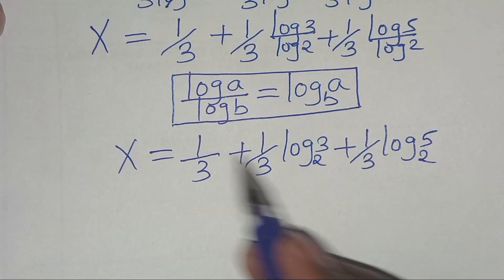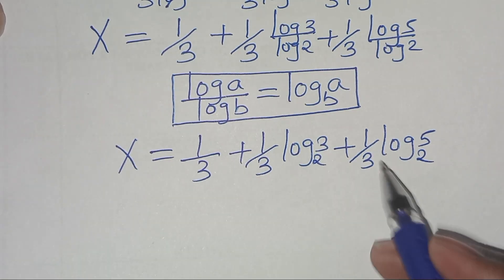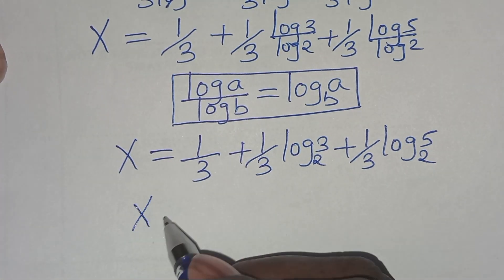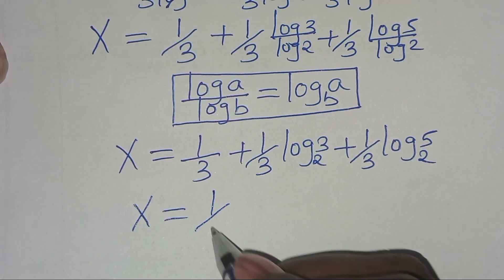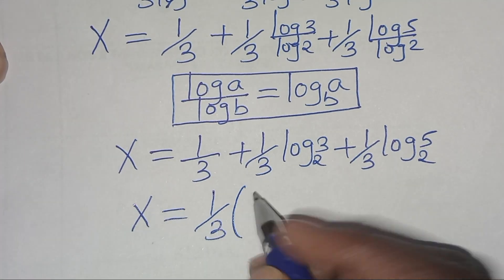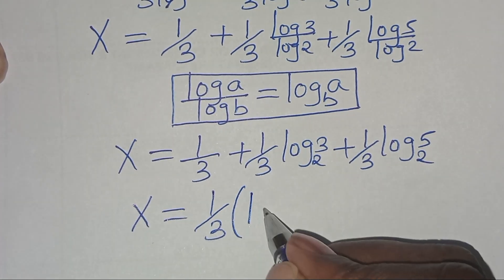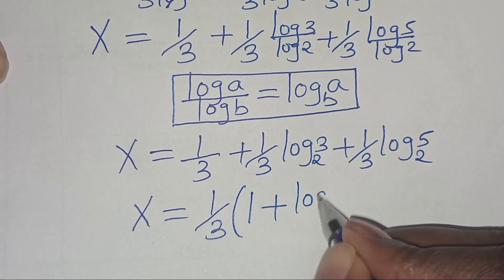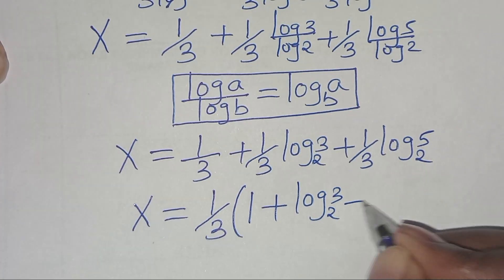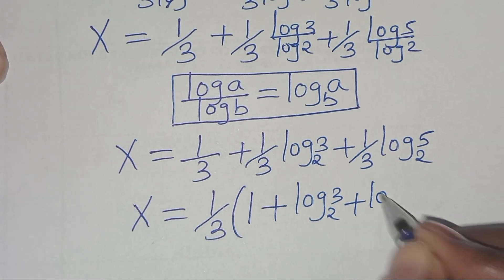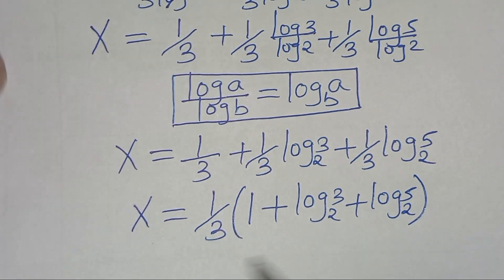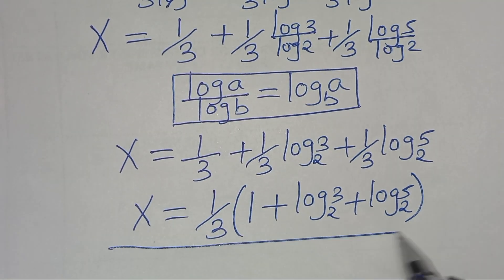But since 1 over 3 is common here, we can factor out 1 over 3, so that x is equal to 1 over 3 into the parentheses: 1 plus log 3 to base 2, plus log 5 to base 2. So this is the value of x.